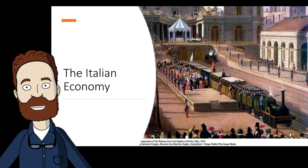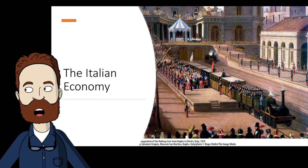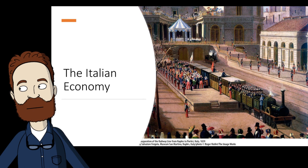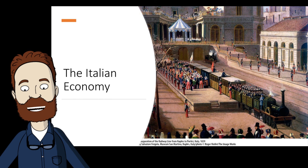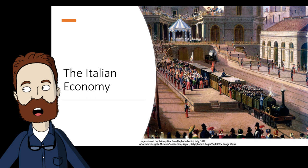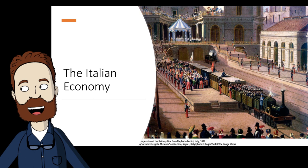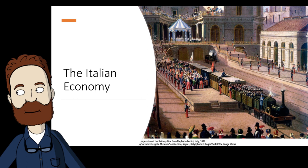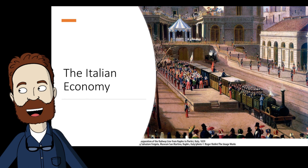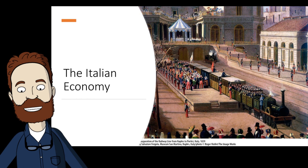Once Italy became independent and unified, they established a parliamentary government. Their parliament was bicameral with two houses: the Senate, whose members were appointed for life by the king, and the Chamber of Deputies, elected by restrictive franchise. There was also a cabinet of ministers appointed by the king but responsible to parliament. Over the course of the rest of the 19th century, there was a steady growing socialism gaining strength in the poverty-stricken south.